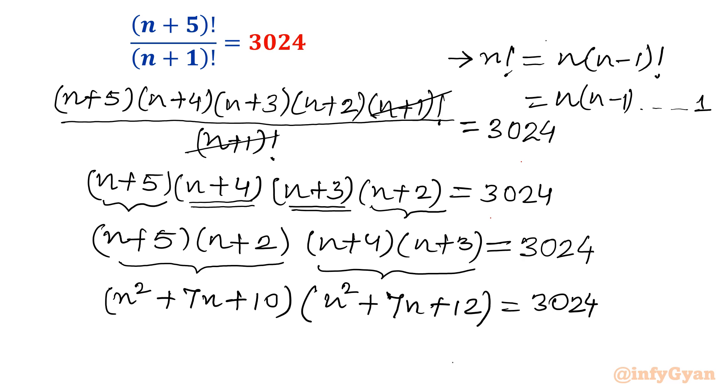So here we will substitute n² + 7n equal to t. This term we will call t, so that our calculation will be minimized. So only one quadratic you will get here. Let me write t + 10 and in the second bracket, t + 12. So (t+10)(t+12) equals 3024.